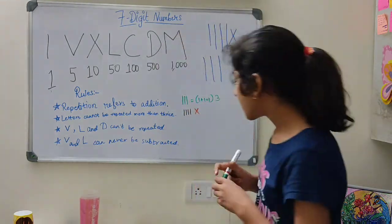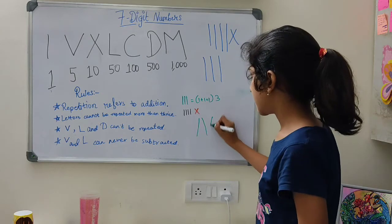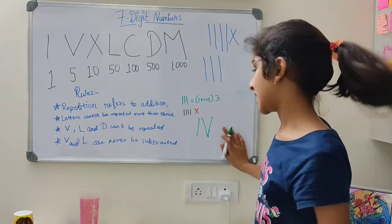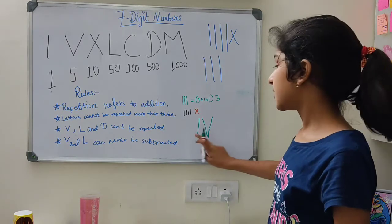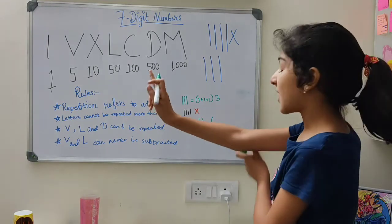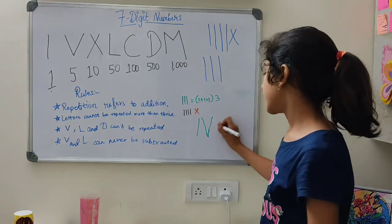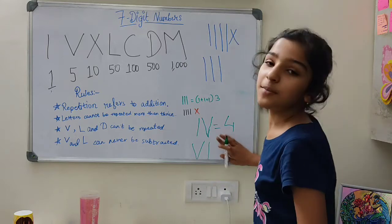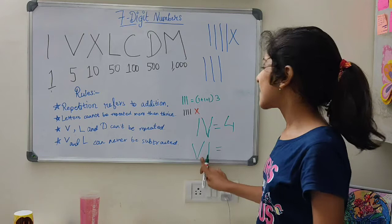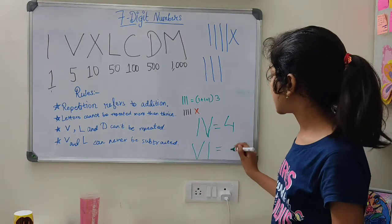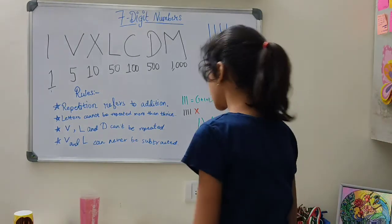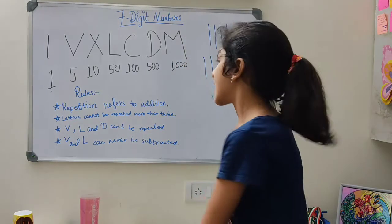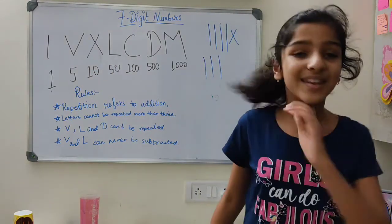Let's take an example with I and V. When I comes before V, the bigger number is on the right, which means subtraction: 5 minus 1 equals 4, so IV = 4. If we flip them — VI — a smaller number is on the right, which means addition: 5 plus 1 equals 6, so VI = 6. Also remember: the letters V and L can never be subtracted.